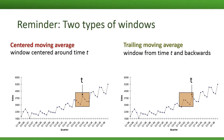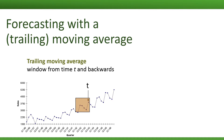Remember that we talked about two types of windows: a centered window and a trailing window. These two windows differ by the location that they are placed at. For visualization, we use the centered moving average, which uses data from before and after the time period of interest. For forecasting, we'll use a trailing window, which only uses data before the period that we're forecasting.